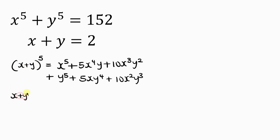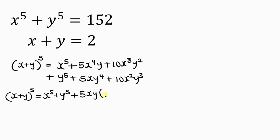We have x plus y raised to the power of 5. Now let's add up. We have x to the power 5 plus y to the power 5, plus — notice that 5xy is common here, so let's factor that out — 5xy, leaving behind x cubed plus y cubed.